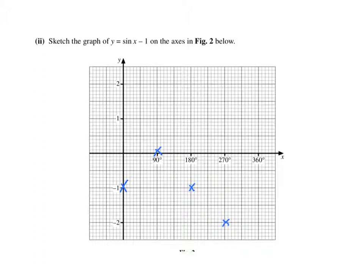270 is minus 2, and then 360 will be minus 1. And again, if we join those up, the sine curve.